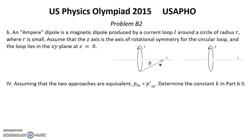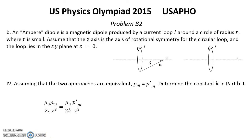Solution for Question 4: Assuming the two approaches are equivalent (PM = PM'), and since in Part A the magnetic field had one expression and here the magnetic field has another expression, equating them gives K = π. That is the answer for Question 4.